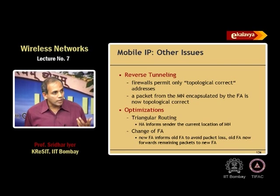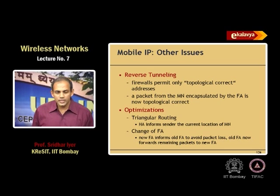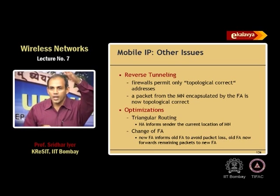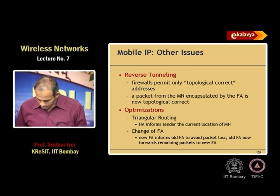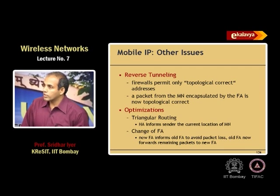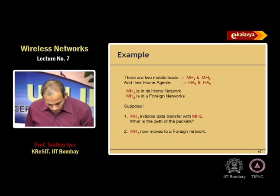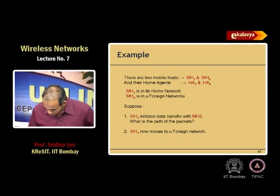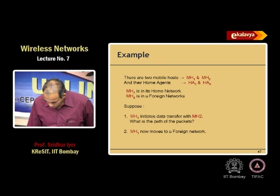If firewalls are going to permit only topologically correct addresses, then you have to send it back to the home agent and let the home agent send it to the correspondent node. Then there are other optimizations called triangular routing — informing the correspondent node and so on. Suppose there are two mobile hosts, MH1 and MH2, and they have home agents.